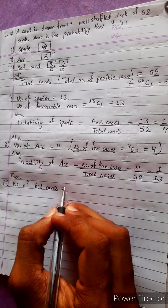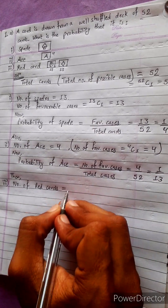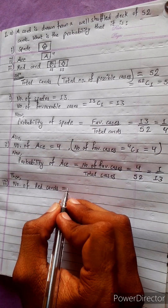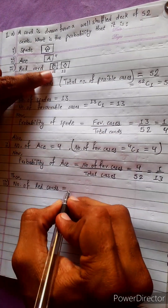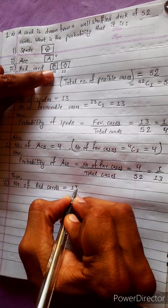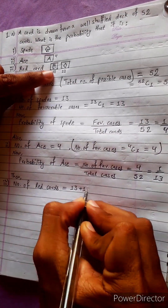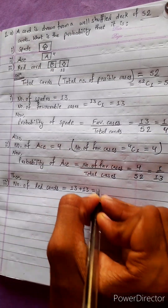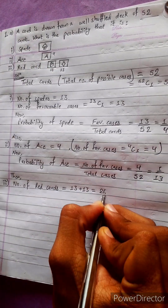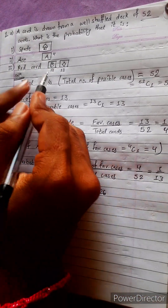Now the third question. In a deck, there are 13 hearts plus 13 diamonds, making 26 red cards in total. There are twenty-six red cards.